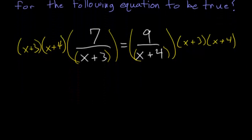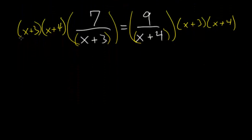On the left hand side, the (x+3) in this numerator will cancel out with the (x+3) in the denominator. And on the right hand side, the (x+4) in the denominator cancels with the (x+4) in the numerator.